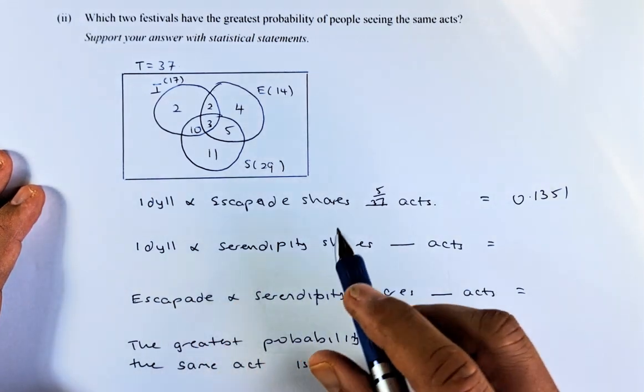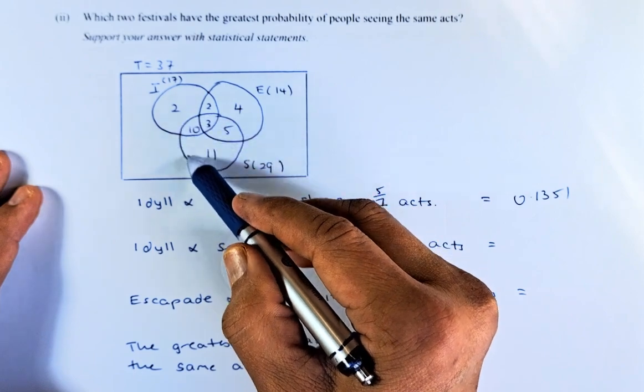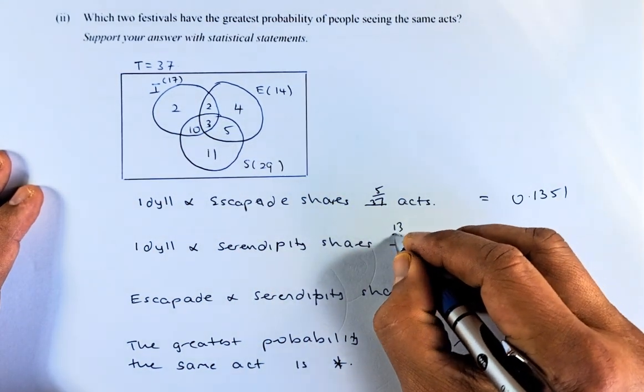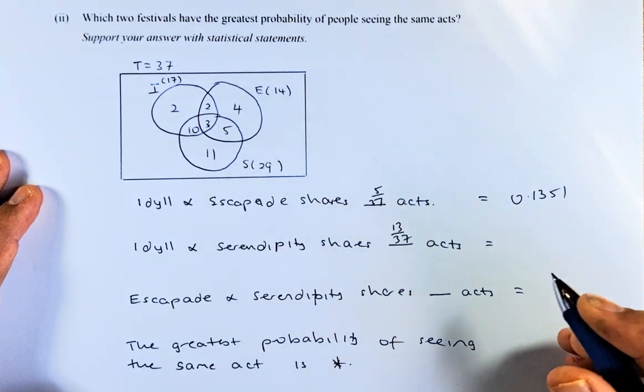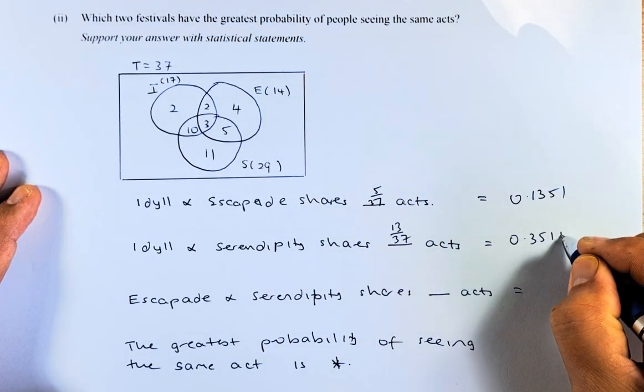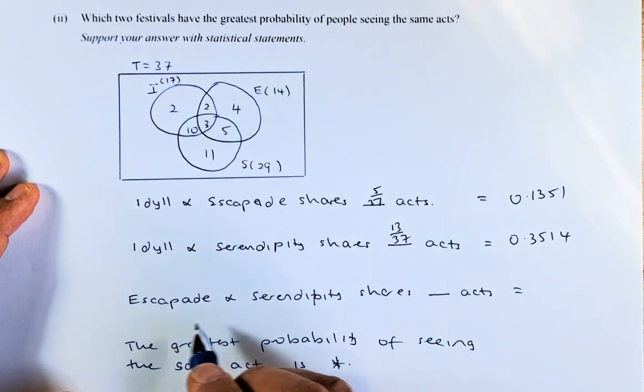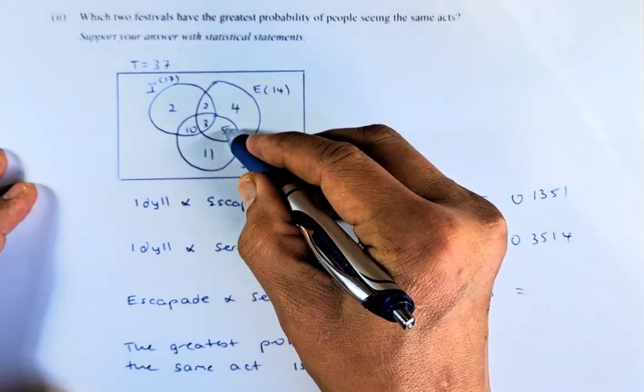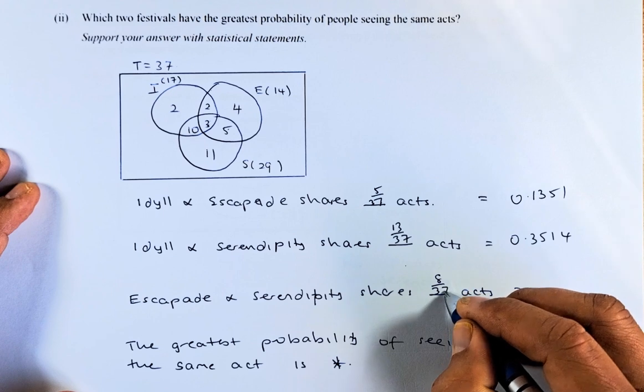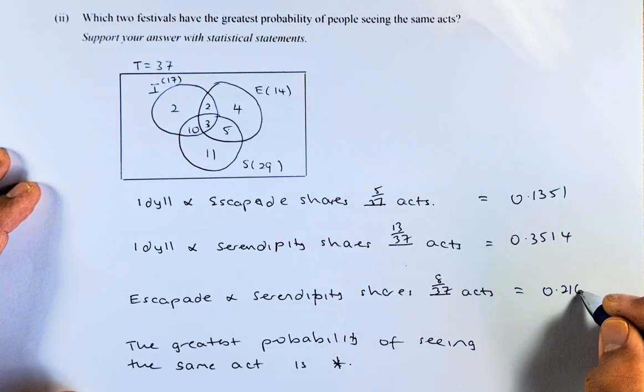Similarly, Idyll and Serendipity is here. So it is going to be 13 out of 37, or simplified is 0.3514. You take 13 divided by 37 is 0.3514. And last but not least, Escapade and Serendipity is going to be 3 plus 5. This region here is going to be 8 out of 37, or simplified is 0.2162.